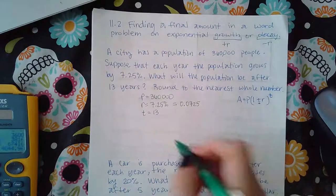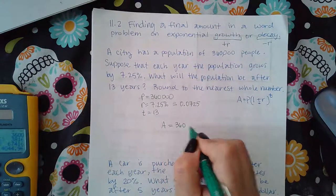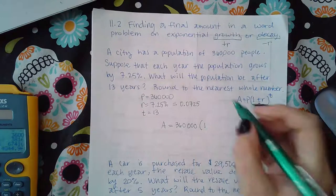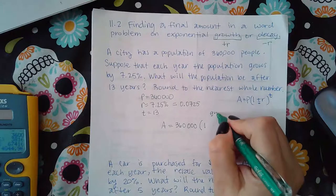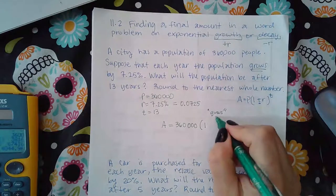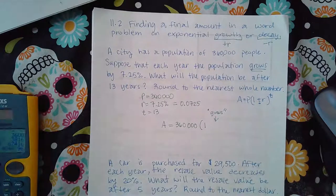So, I'm going to plug everything in. A equals 360,000 times 1. And since it says growth, grows, it literally says that word right there. So I know that this is going to be positive.